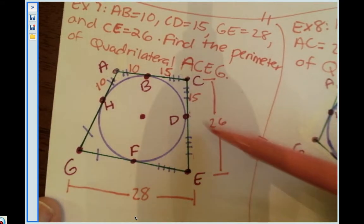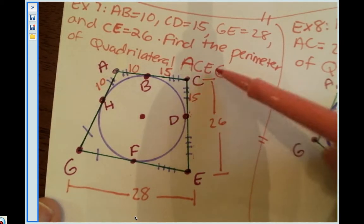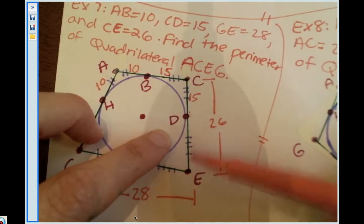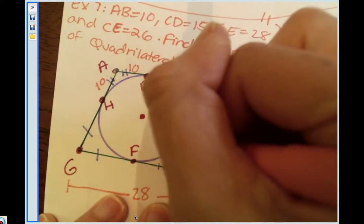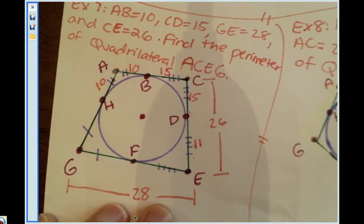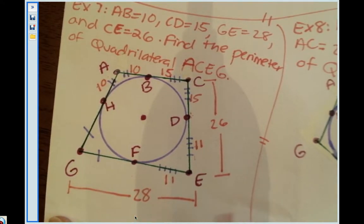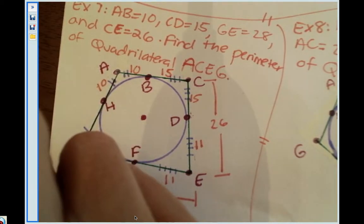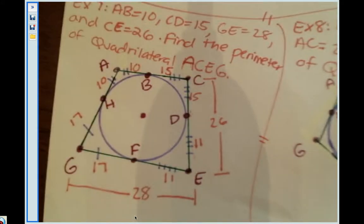You would subtract these because CD plus DE equals CE. So if I add this to whatever this is you get the whole thing, which since I don't know what DE is, if I subtract these two then I'll get DE. So 26 minus 15 will give me 11, which means that this piece is 11. And then FE plus GF will equal GE, which means that the whole thing is 28 and that's 11. 28 minus 11 will give me 17, which if that's 17 that means this is 17.